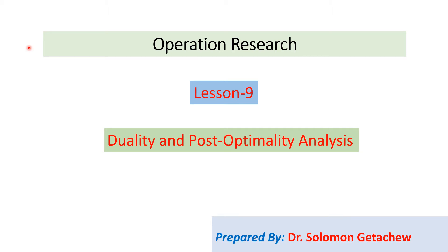Previously in lesson 8, we discussed one of the advantages of duality: finding the solutions of the linear programming problem. Instead of using the primal problem, we used the dual to find out the optimal solutions of the primal. One of the advantages of duality is that it is also possible to find the solutions of the dual, and from those we already get the solutions of the primal. And now we will discuss post-optimality analysis using duality.